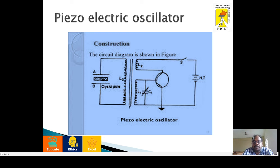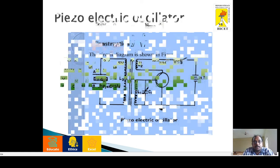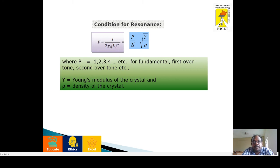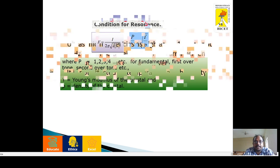The condition for resonance is: F = 1 / (2π√LC) = P / (2L) × √(Y/ρ), where L1 and L2 are the inductor coil and capacitor, P is the fundamental frequency, L is the length of the crystal, Y is the Young's modulus of the crystal, and ρ (rho) is the density of the crystal.